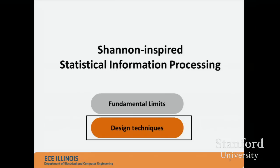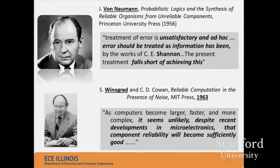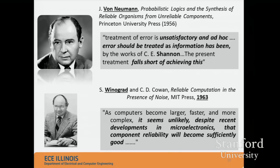If the Shannon-inspired perspective is to be applied in its fullest extent, we should talk about limits — what is the limit of information processing over a noisy fabric — and about design techniques. Building computing systems using the Shannon perspective is not a new idea. The 1956 paper that von Neumann wrote indicated that aspiration very clearly on the first page, and it led to follow-on works by coding and information theorists asking how we can build reliable logic networks with unreliable gates.